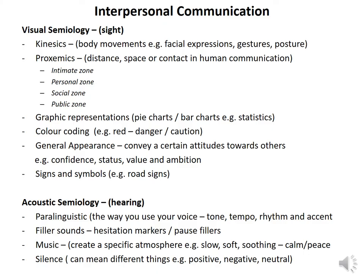Acoustic simulogy requires you to hear. There is paralinguistics — the way you use your voice: your tone, tempo, rhythm, and accent. If you've got a certain accent, people might not be able to understand you. The rhythm of your voice and the tone must not be monotonous, not too quick and not too slow — it must be a medium tone of voice. You must also use filler sounds and hesitation markers, where a person pauses and takes a break. Music is also acoustic simulogy.